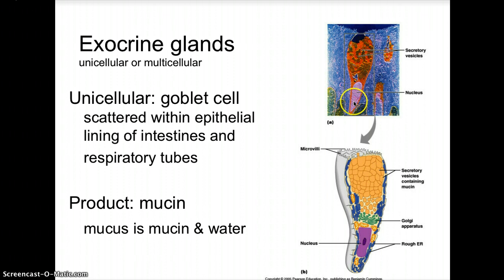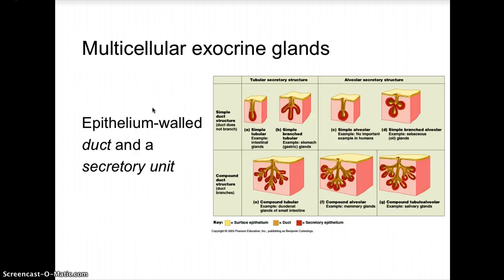Here you can see the secretory vesicles and the nucleus of the cell. The unicellular exocrine gland is a goblet cell, scattered within the epithelial tissue lining of the intestines and respiratory tubes. The product is mucin, and mucus is the mucin plus water. Mucin and mucus are protective barriers against bacteria and viruses. When you get a cold, you produce more mucus — hence the runny nose — to protect internally from additional invasion of bacteria and viruses.